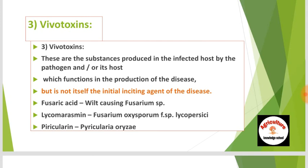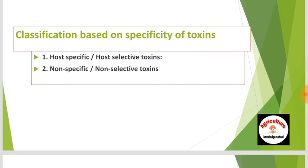Additional vivotoxin examples include lycomarasmin, caused by Fusarium oxysporum f. sp. lycopersici, and pyricularin from Pyricularia oryzae. Vivotoxins were researched by scientist T. Sadashivam. Classification based on specificity of toxins gives us two groups: host-specific or host-selective toxins, and non-specific or non-selective toxins.